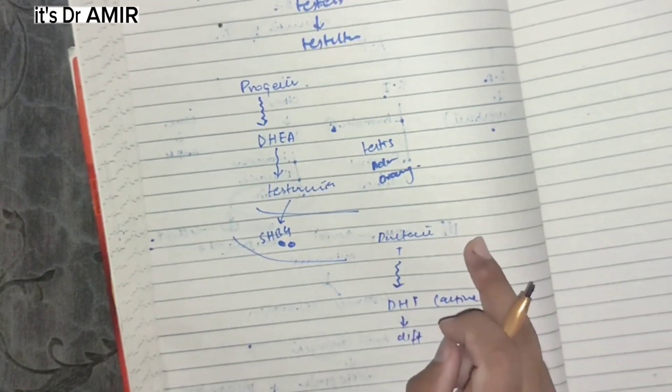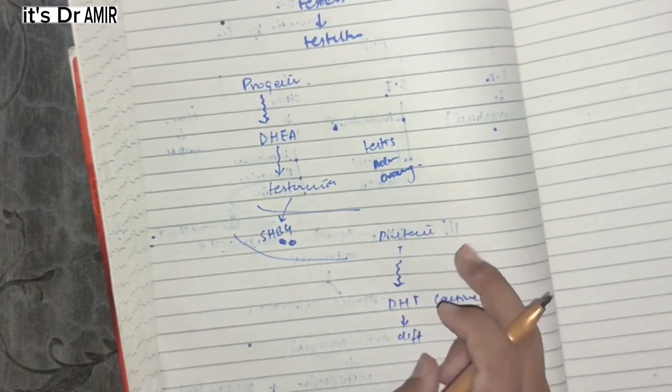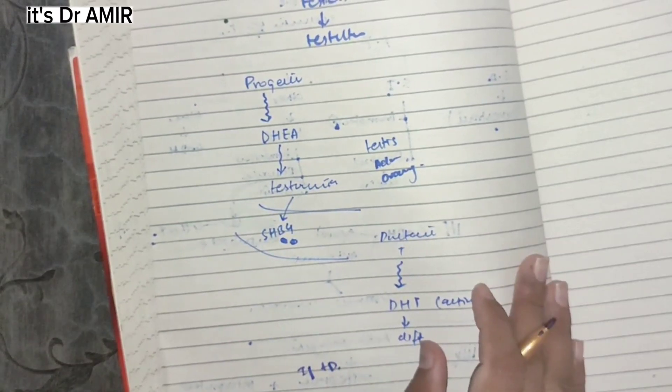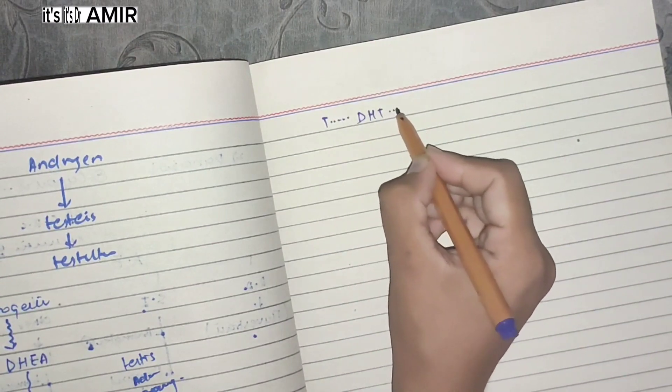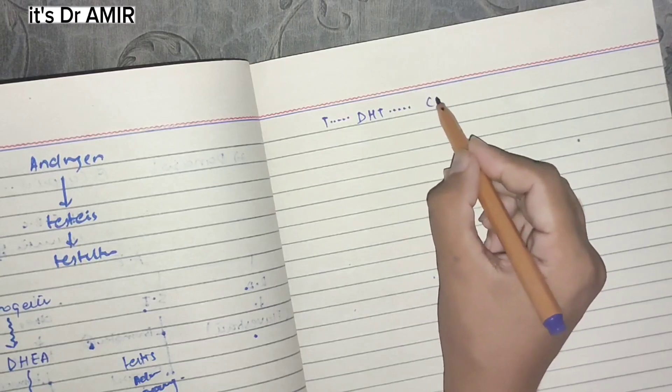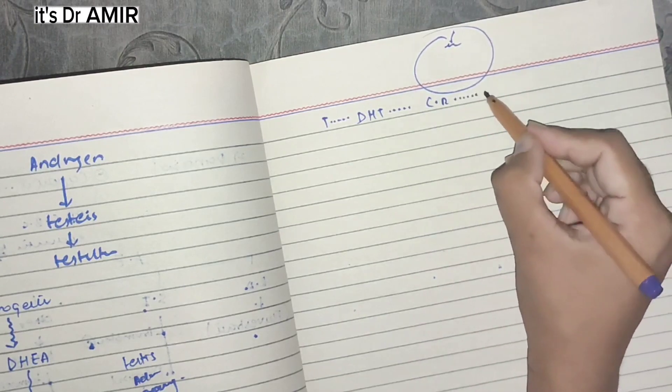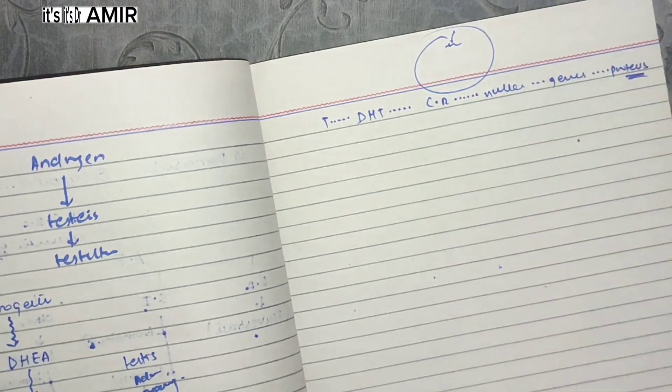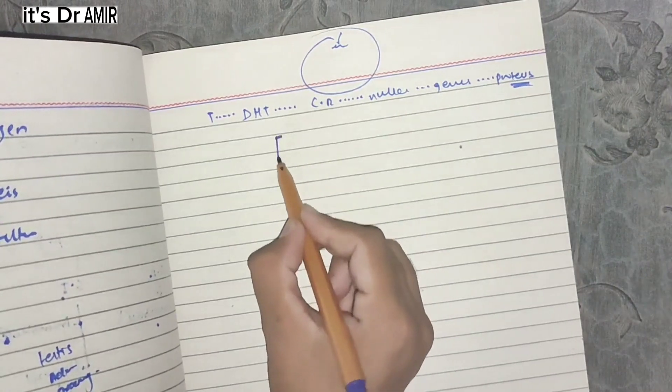If we administer it synthetically as oral form, oral bioavailability is reduced because of hepatic first-pass metabolism. This is why it is prepared in injection form or transdermal patch form. Now let's talk about the effects. Testosterone has anabolic function and reproductive function.